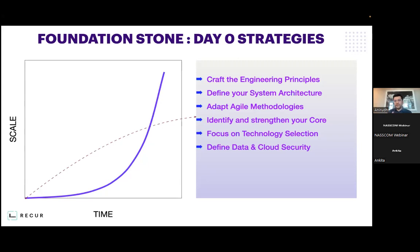The second important day zero strategy is to define your system architecture. It is very difficult to change what system architecture you build. Don't be biased — just because GraphQL is jazzy or everyone is using Kubernetes clusters doesn't mean you really need it at your current scale. Follow proper system design principles: list your requirements — both functional and non-functional — know your limitations, and then build and define your system architecture.